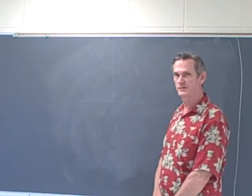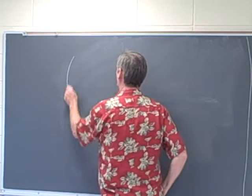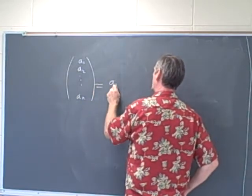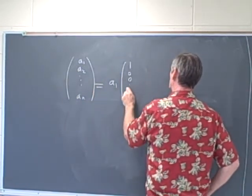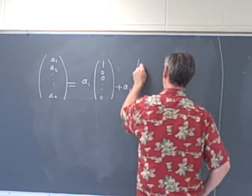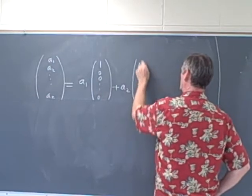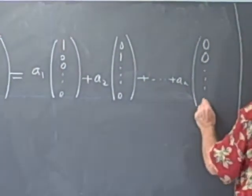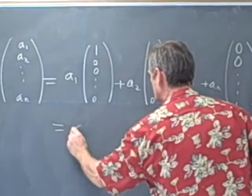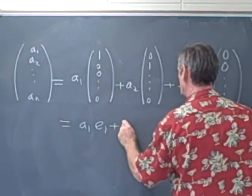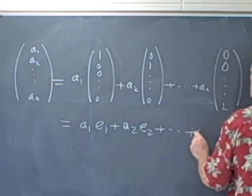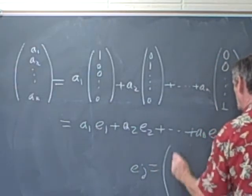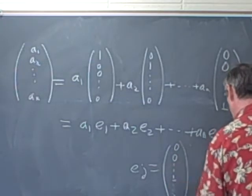Let's think about a vector variable a1, a2, ..., a_n. We can write that as a1 times e1 plus a2 times e2, plus ... plus a_n times e_n, where e_j is the vector with exactly one non-zero entry in the j-th row.